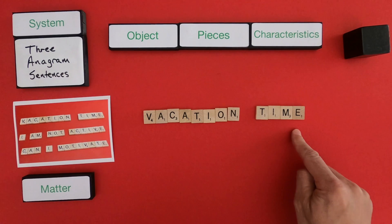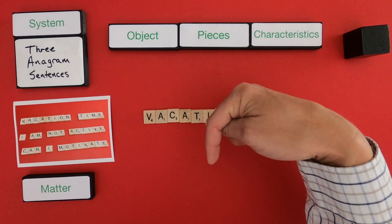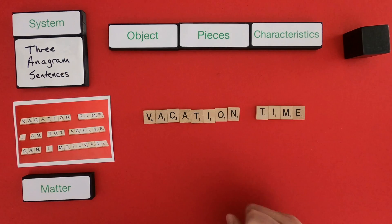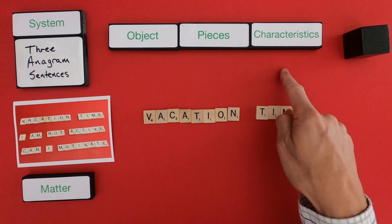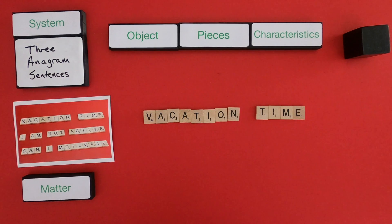Okay, so the first phrase is vacation time. So what I'd love to have you do is pause the video. There's some thinking slides down below that have all three phrases. And try to do what I did in the previous section, where I defined the object, I listed the pieces, and then I talked about the characteristics. So pause now.